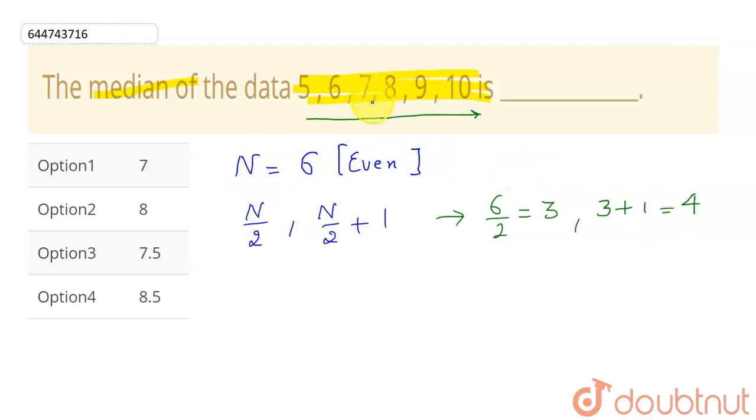So my third term is this 7, and this fourth term is this 8. So my median will be sum of this n by 2 and n by 2 plus 1 term, which is 7 and 8 here,